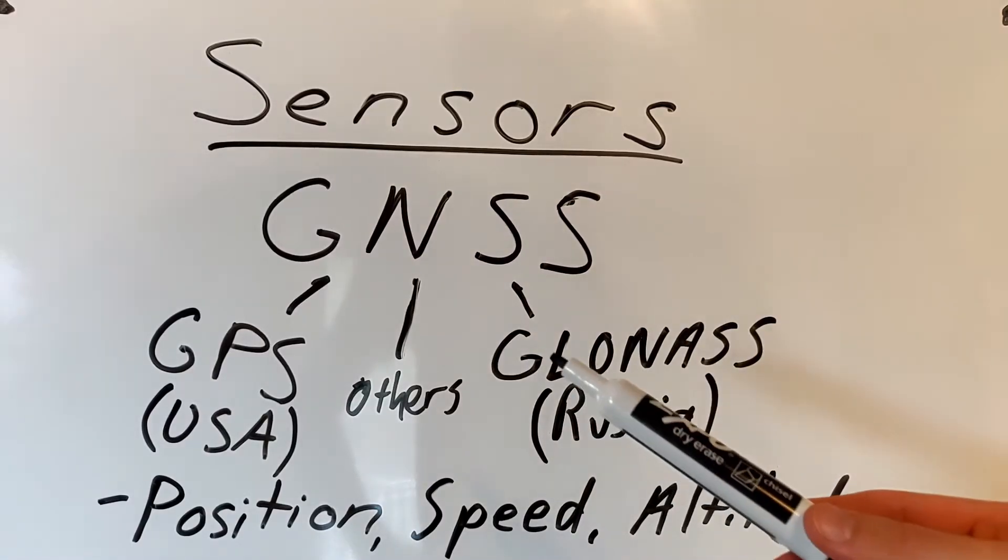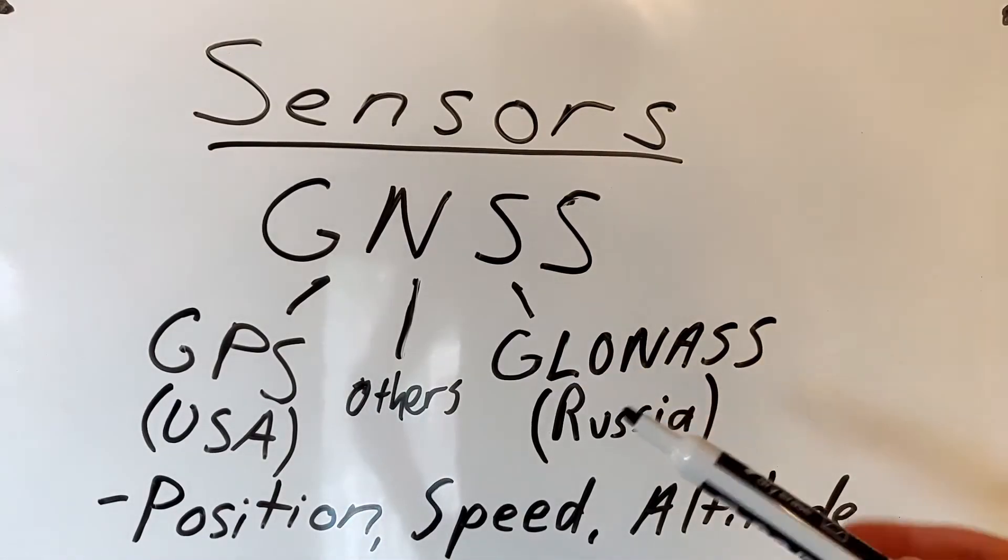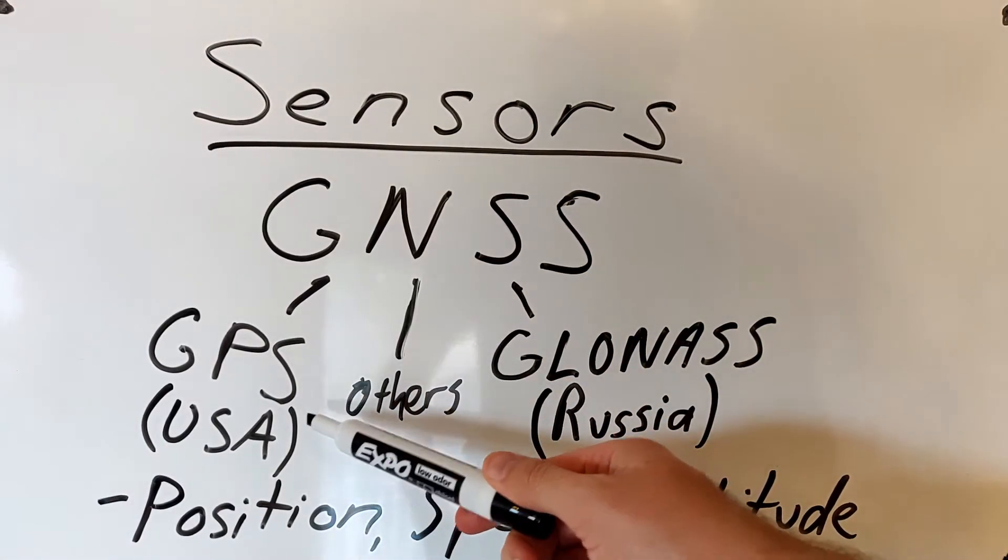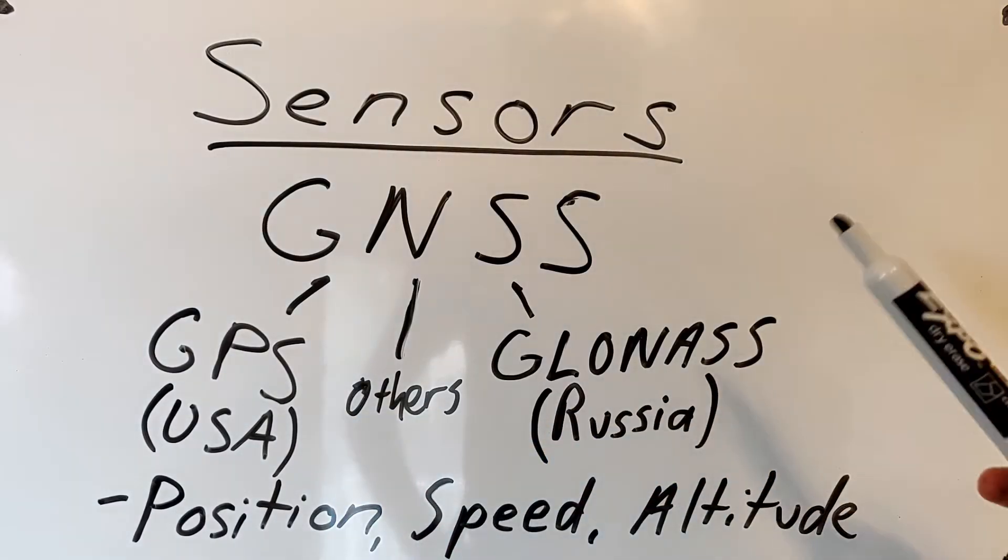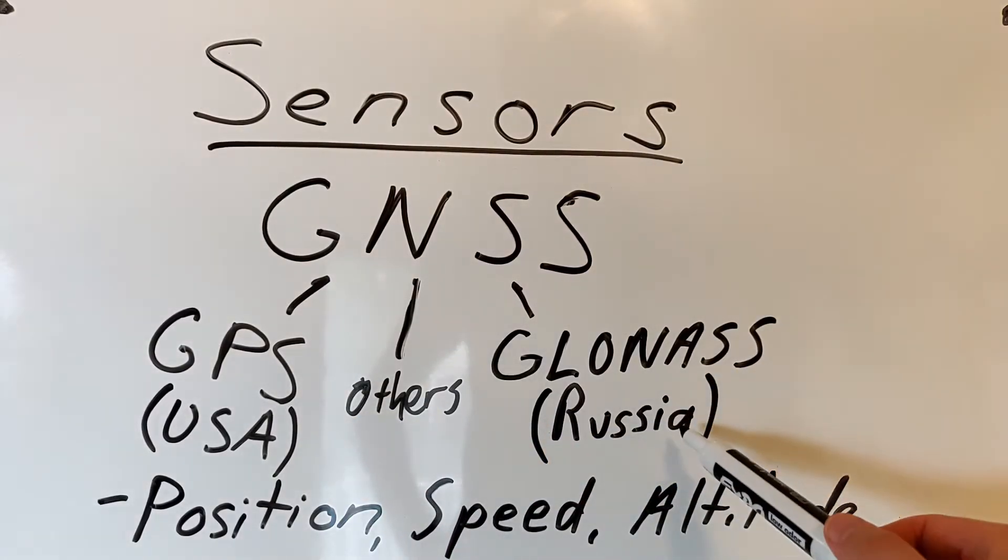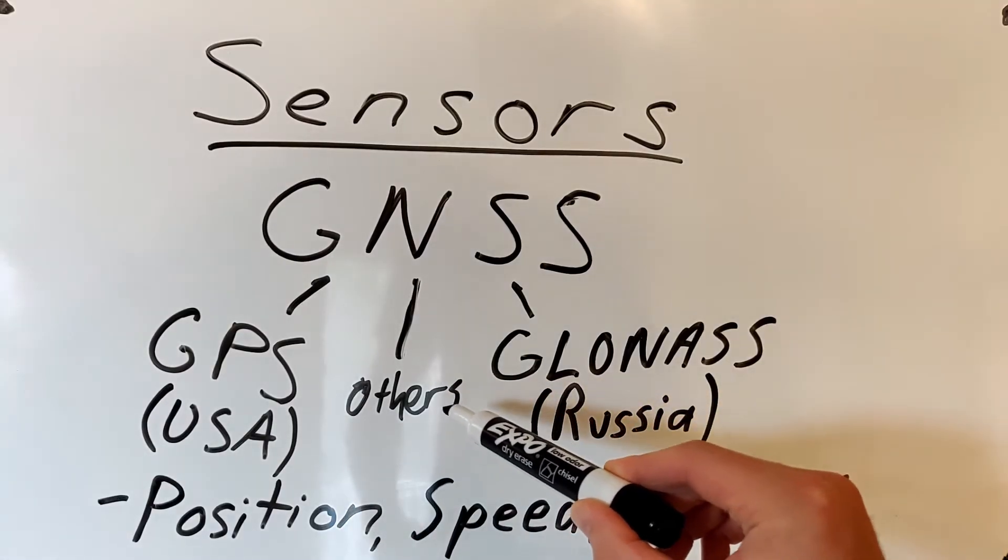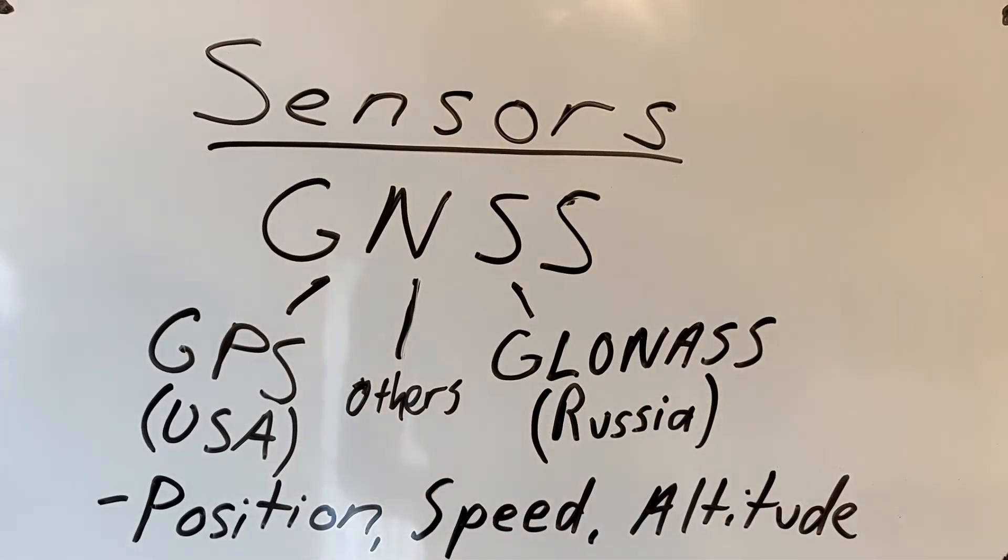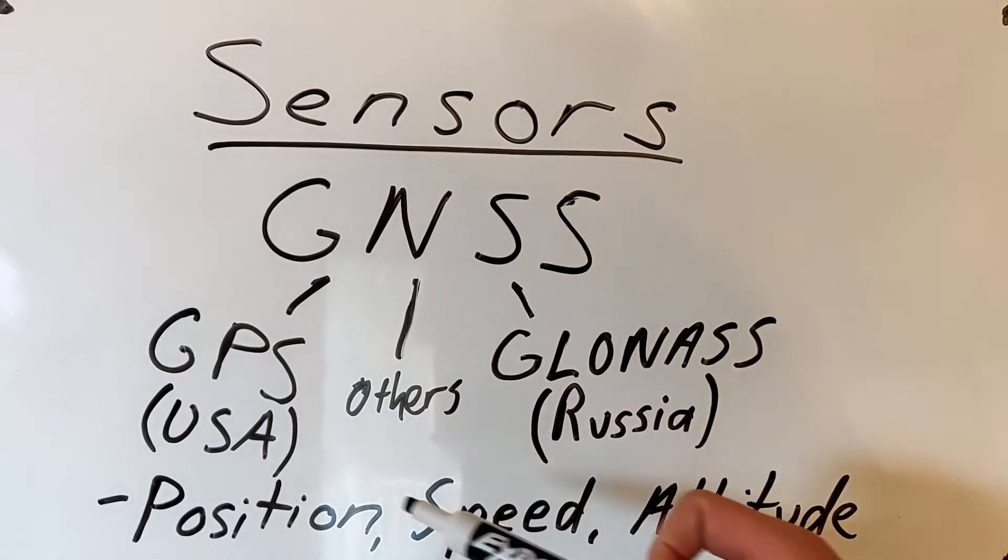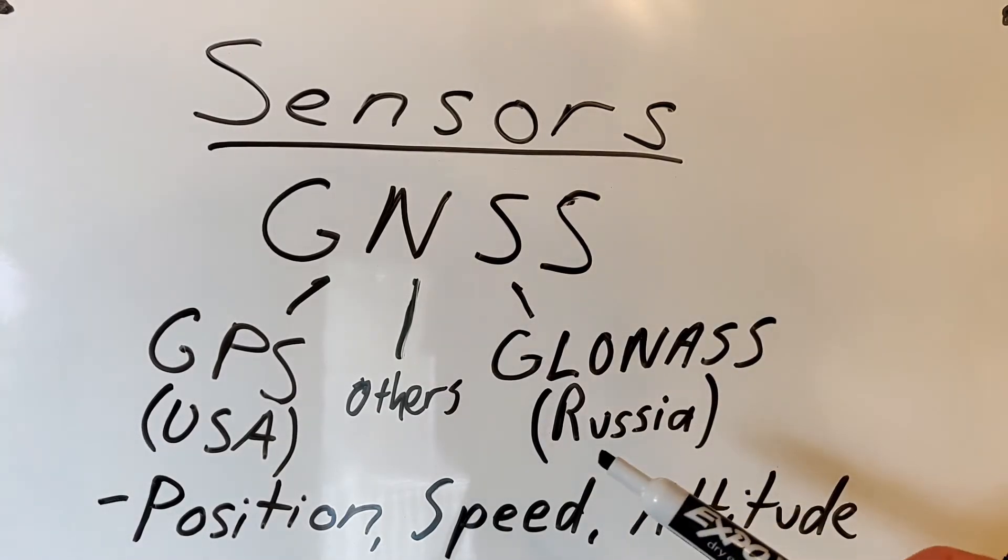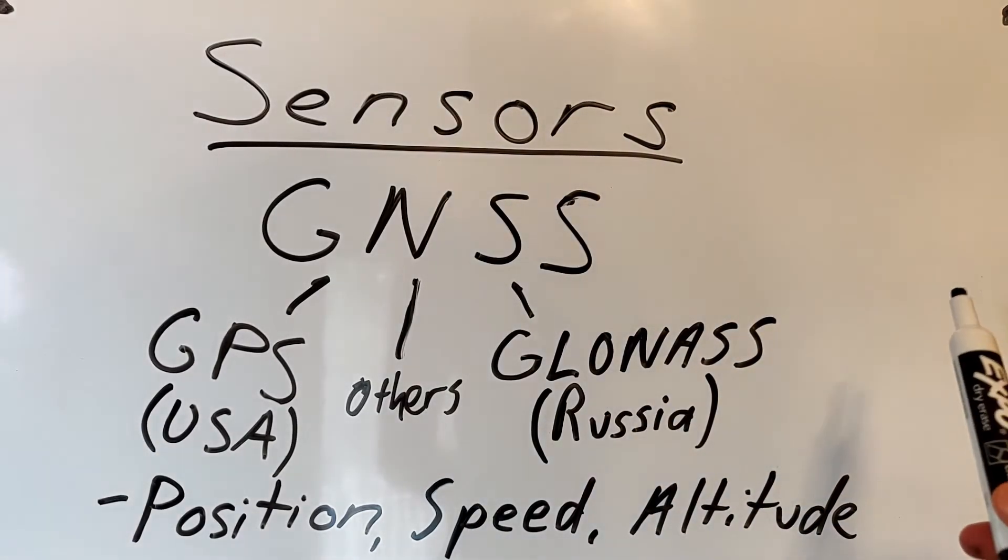GNSS stands for Global Navigation Satellite System. This includes GPS from the United States and also GLONASS from Russia and there's also some other smaller ones like Galileo. People usually call the GNSS just GPS because that's the one that's typically included and ours will have receivers for both GPS and GLONASS. Based upon the position of multiple satellites in the sky we can determine our position, speed, and to a lesser extent our altitude.